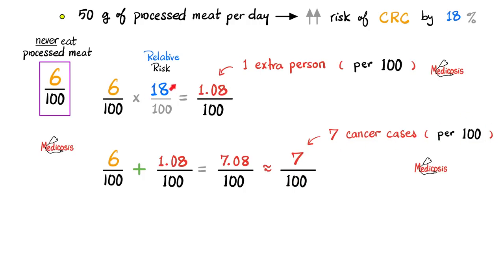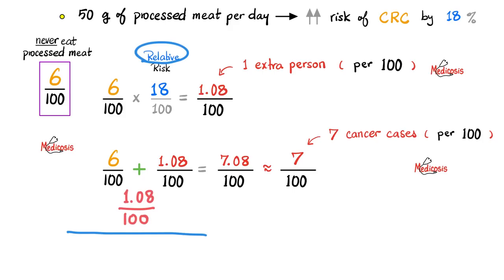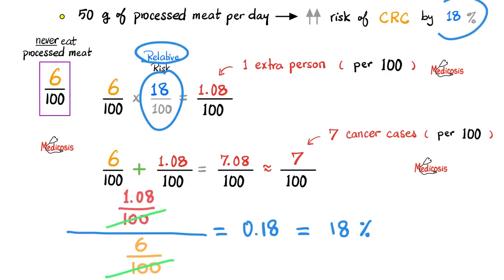So how did the WHO arrive at the 18% number? Anytime you see the word 'relative,' it implies division. We divide: on top we put 1.08 per 100 — the extra risk added by consuming processed meat. In the denominator, we put 6 divided by 100 — the number of people who got colorectal cancer out of 100 that do not eat processed meat. Cancel 100 with 100, then divide 1.08 by 6, and this gives you 0.18, which is 18%. That's where the 18% number comes from.